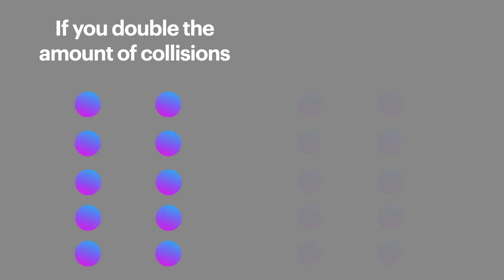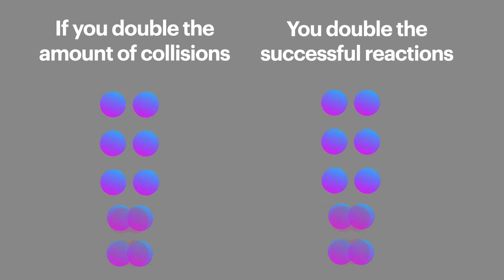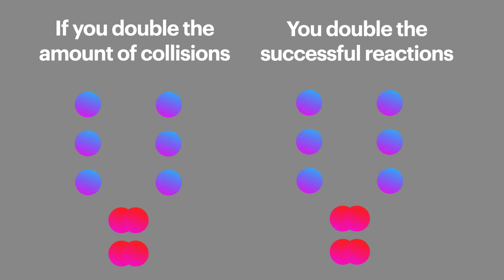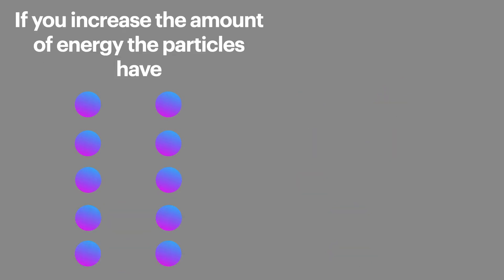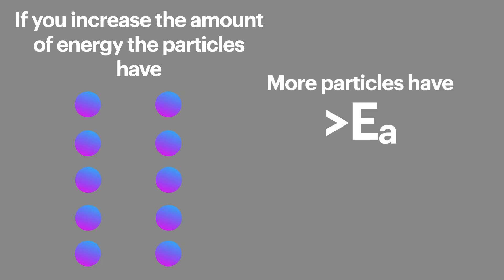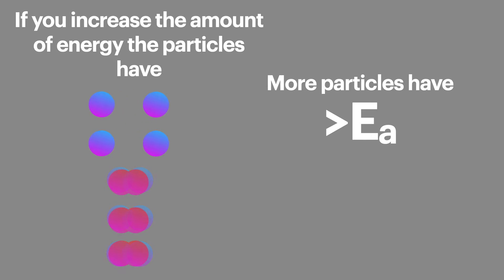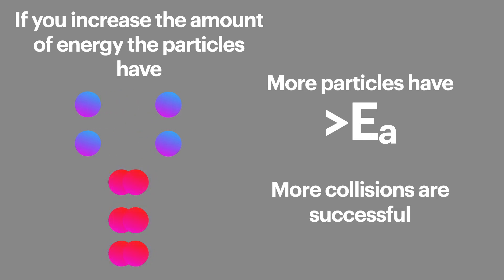If we increase the amount of collisions taking place every minute of the reaction, we will increase the amount of reactions taking place each minute — this increases the rate of reaction. If we increase the amount of energy the particles have so more particles have energy greater than the activation energy, this means more of the collisions will result in a chemical reaction. This also speeds up the rate of reaction.